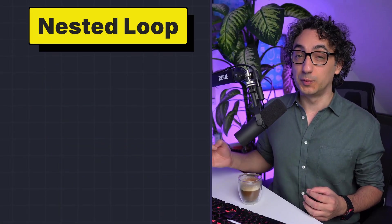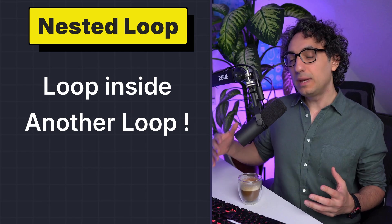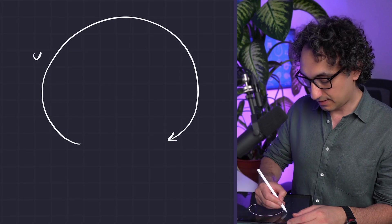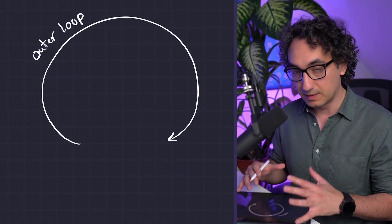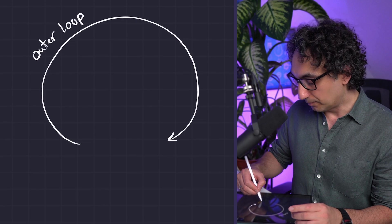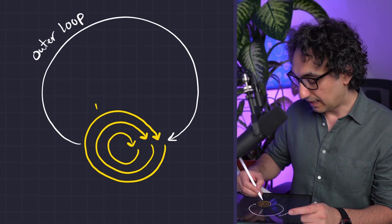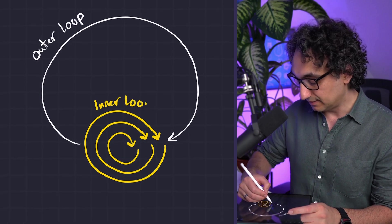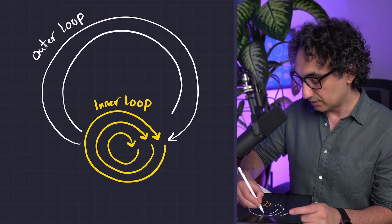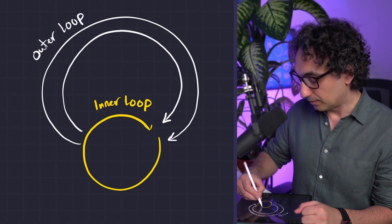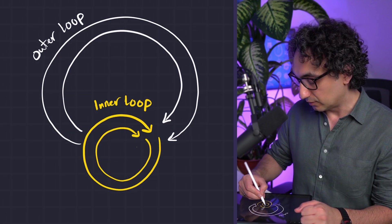Now we're going to talk about something called a nested for loop. It is very simple — we have a loop inside another loop. We have a big loop we call the outer loop, and for each run of this big loop we're going to run a completely smaller loop, which we call the inner loop. Once the small loop is completed, we go to the next iteration of the outer loop.